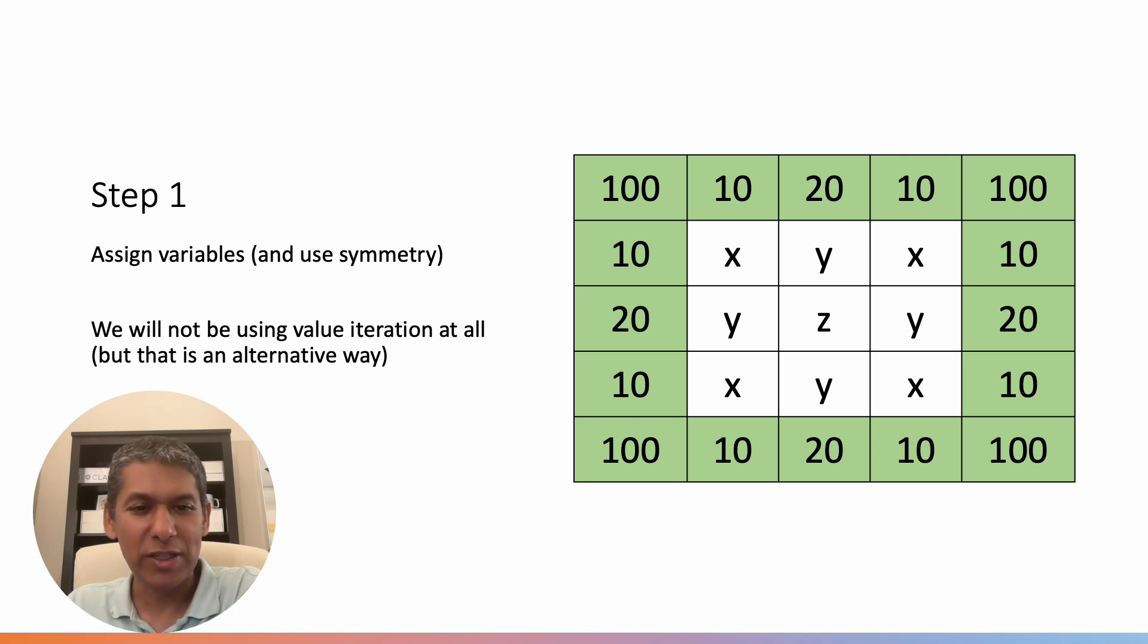Okay, so we use the symmetry to our advantage to have only three variables. But if we had nine variables, that's fine. The equations would be more complicated. But the method in concept is still the same.